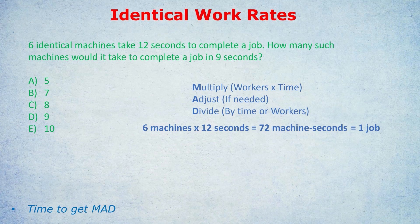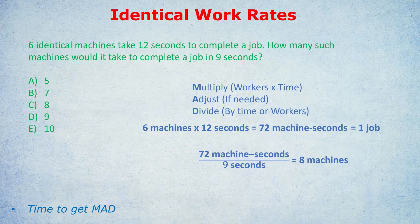So we move straight on to divide. The last step is we always divide by either the time deadline or the number of workers given. The units will cancel out. Here we were given a time deadline of nine seconds, so we divide by nine seconds. The seconds in the units cancel out, leaving machines. We have 72 divided by nine, which is eight — eight machines. It would take eight machines to complete this job in nine seconds. Answer C.